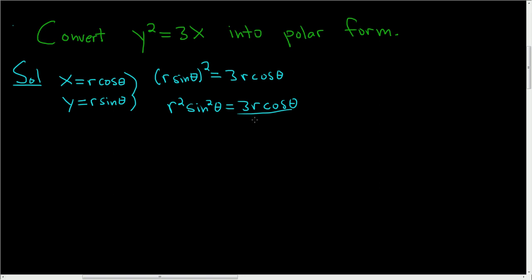Now divide by r on both sides. So we get r sin² θ = 3 cos θ.